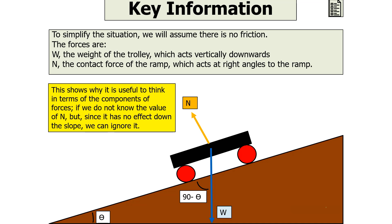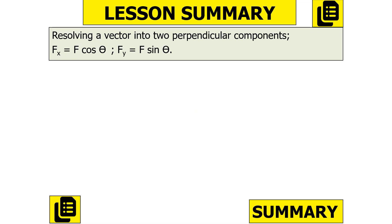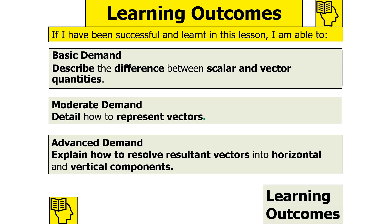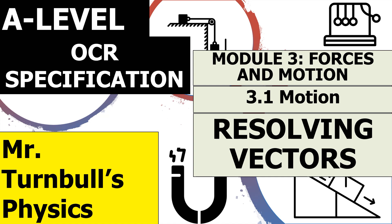That brings an end to our lesson today. We should now be able to resolve a vector into two perpendicular components: Fx equals F cos theta and Fy equals F sin theta, where theta is the angle from the horizontal. We should be able to describe the differences between scalar and vector quantities, detail how to represent vectors, and explain how to resolve vectors into horizontal and vertical components. Thank you for watching this lesson, which is part of the Forces and Motion module in the OCR A-level physics specification, in the subtopic of motion, looking at resolving vectors.